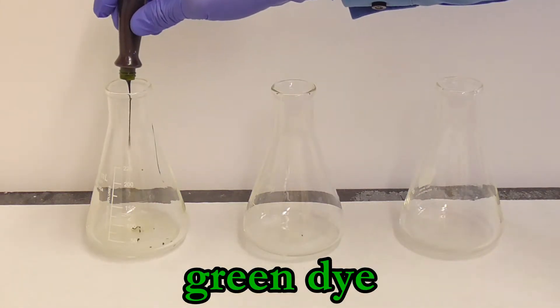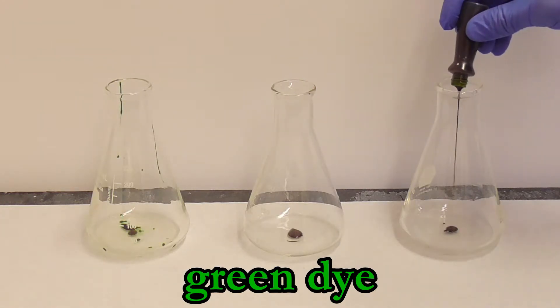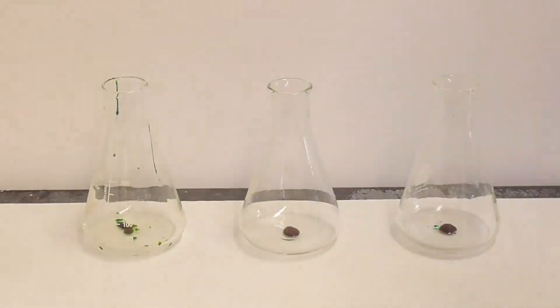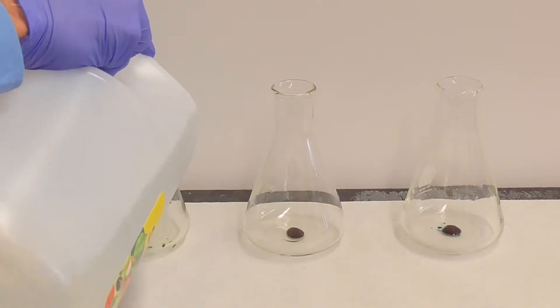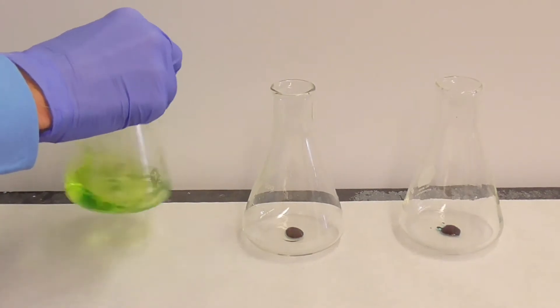Let's test the natural green food dye first. I'll add a little bit to each of these three flasks and now I'll add vinegar which has a low or acidic pH to the first flask. We see a yellow green color develop.